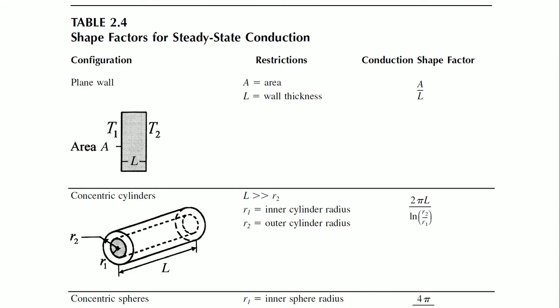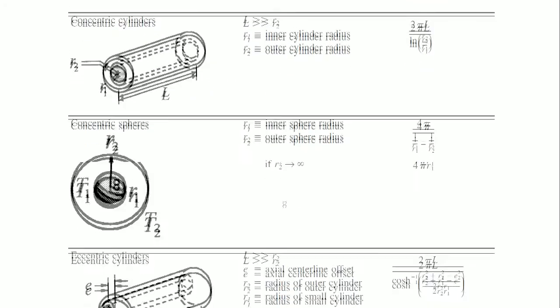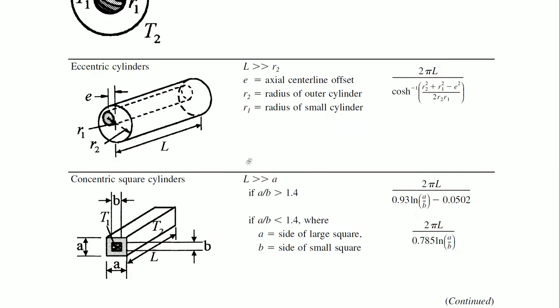We have a huge number of these expressions, and finally we come to more practical things — shape factors. If you already know a shape, meaning if it is a square with a given area and wall thickness, these can be directly used. In the case of plane walls, concentric cylinders, and concentric spheres, a large number of configurations are shown. For example, an eccentric cylinder — does it occur? Yes.